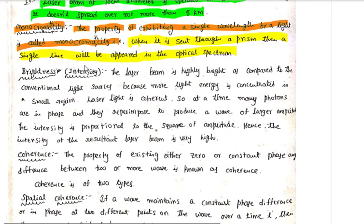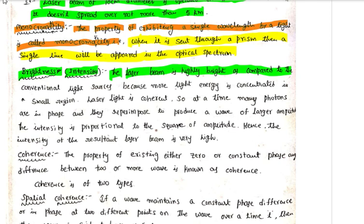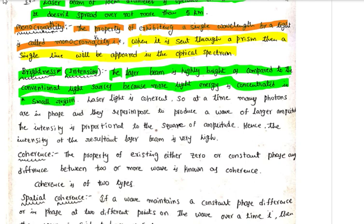The third characteristic is Brightness. That means laser is very intense. The laser beam is highly bright as compared to conventional light sources, because more light energy is concentrated in a small region.